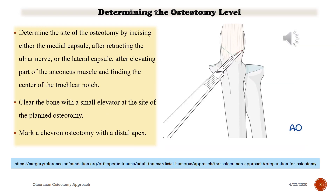Determining the osteotomy level: determine the site of the osteotomy by incising either the medial capsule, after retracting the ulnar nerve, or the lateral capsule, after elevating part of the anconeus muscle, and finding the center of the trochlear notch. This is very important — the osteotomy level is the most critical point of this surgical procedure.